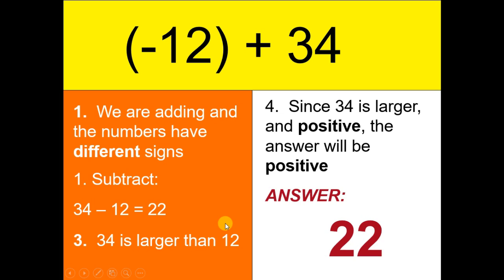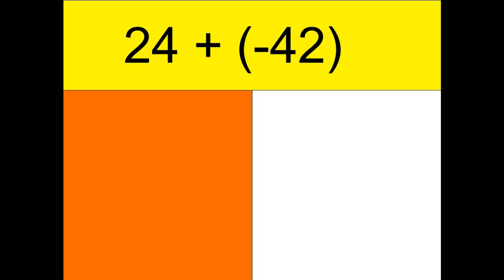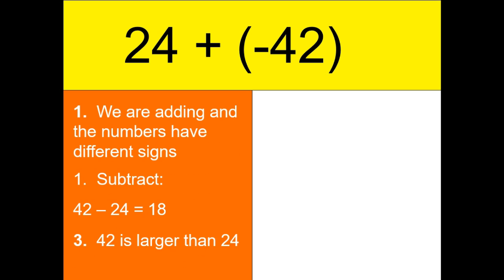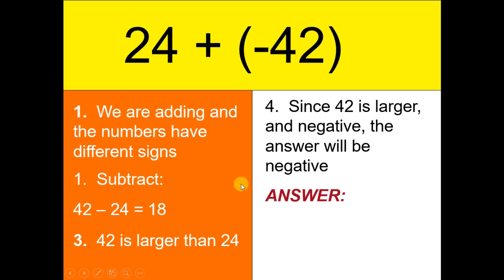Let's consider another example: 24 and negative 42. Since they have different signs, we subtract the numbers: 42 minus 24, which gives us 18. However, 42 is the bigger number and its sign is negative. So our final answer is negative 18.